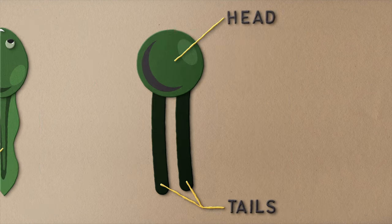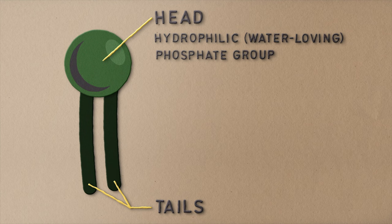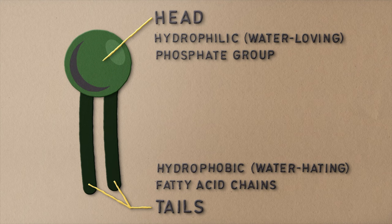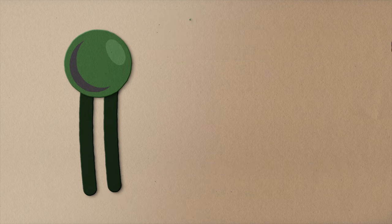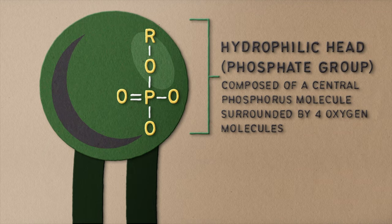The head of the phospholipid molecule is a hydrophilic, or water-loving, phosphate group. And the two tails are hydrophobic, or water-hating, fatty acid chains. Phosphate groups are made up of a central phosphorus molecule surrounded by four oxygen molecules.